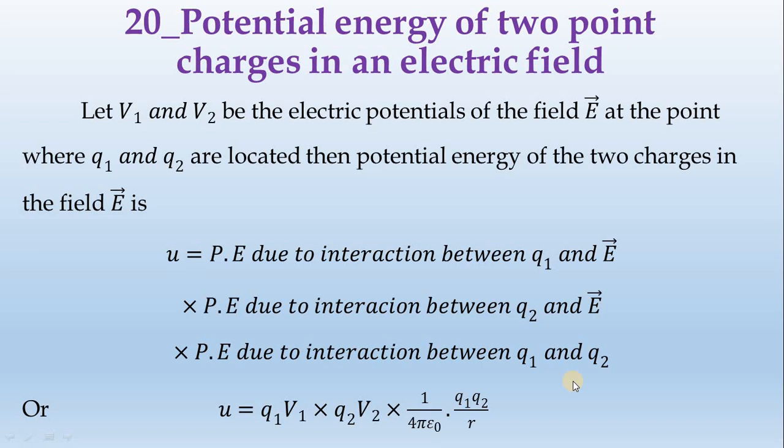Potential energy of a single charge stored at a point - work done stored at a point is potential energy. U is the function of R is equal to Q times V of R.